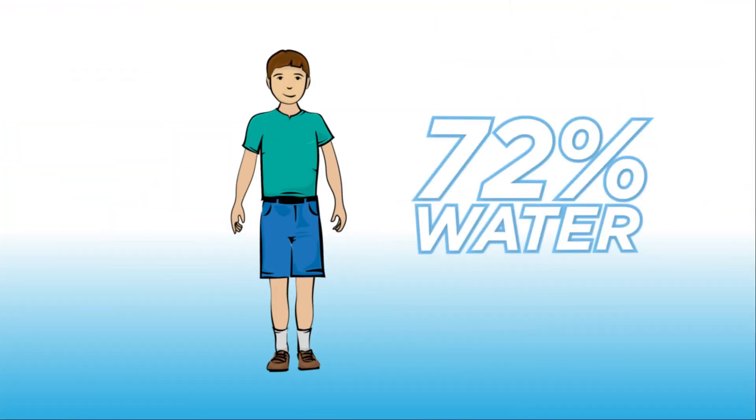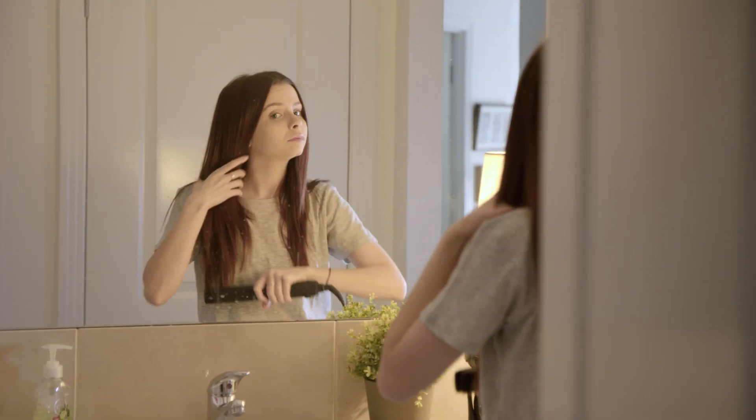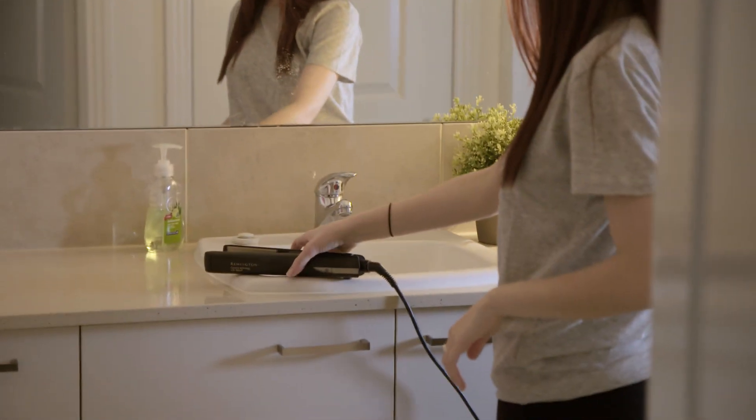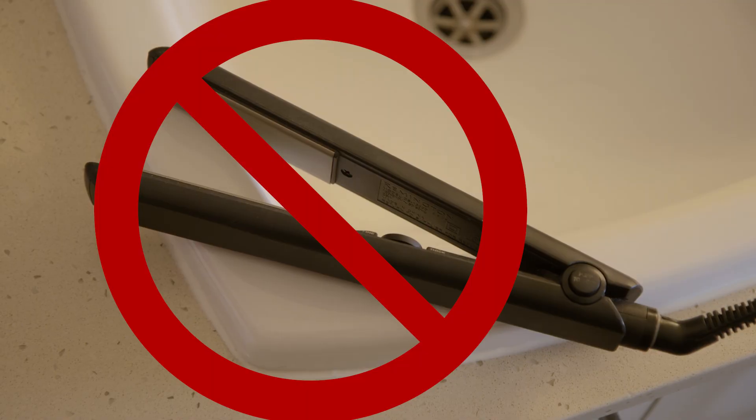That's why electricity passes easily through our bodies, because they're made up of a lot of water. This is why it's so important to keep water away from electricity and electrical appliances.